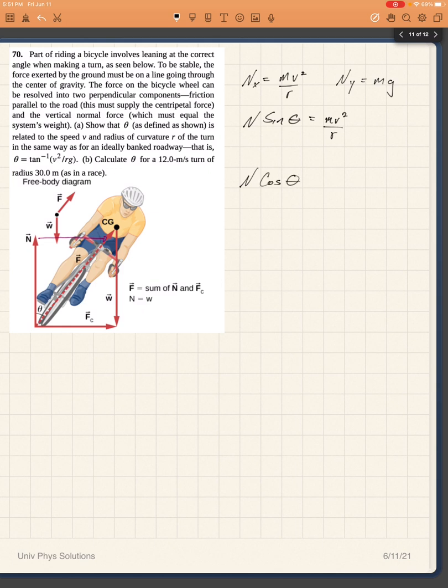Similarly, n cosine of theta will be proportional to mg. And in this case, what I want to do is to find theta. What I can do is from these two equations, I can solve for n and then set them equal to each other and have n disappear.